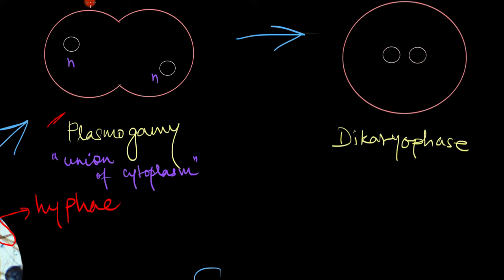Now in many fungi like mushrooms, this cell remains as it is for quite some time, just this one cell with two free haploid nuclei inside because these nuclei don't fuse immediately. Since they're not fused, we cannot really call this cell a diploid cell or denote it as 2N. So instead, we call this condition as a dikaryon.